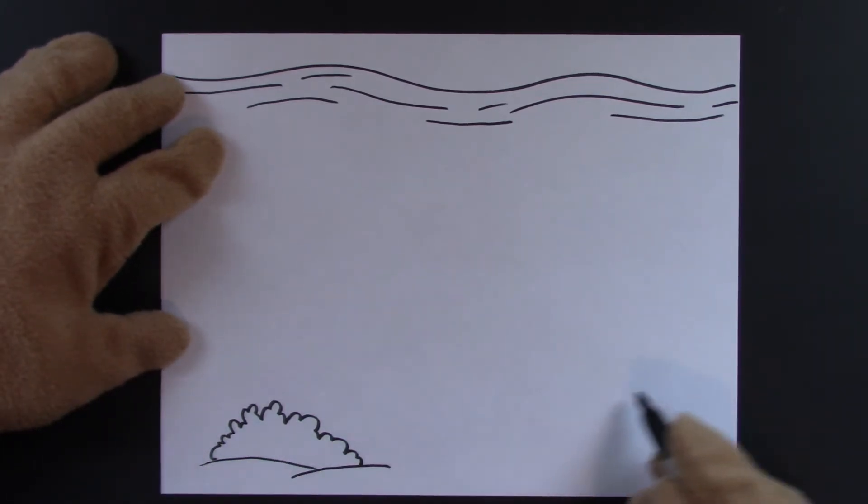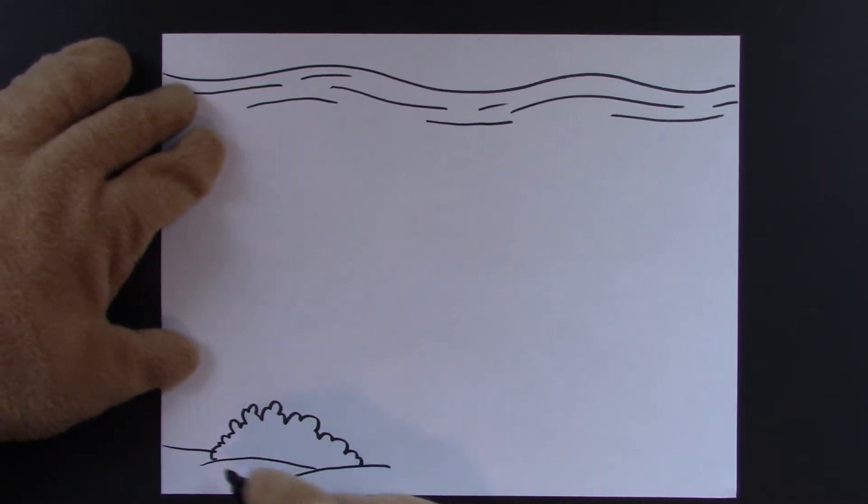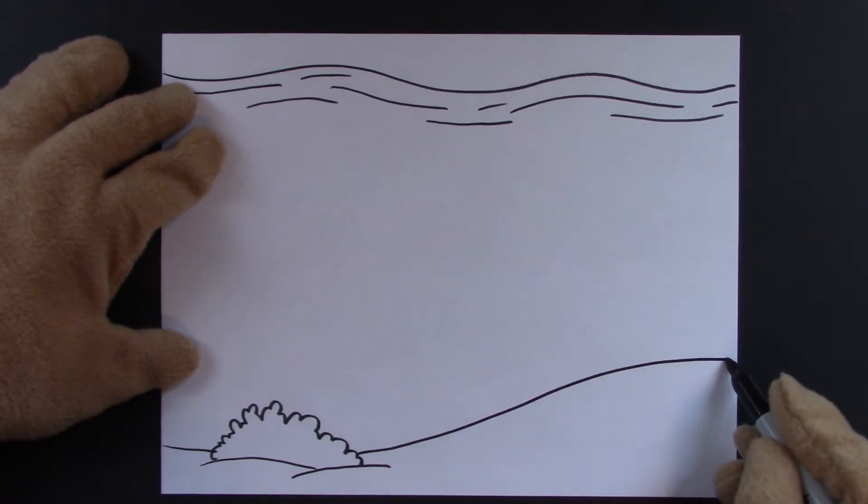Now let's draw the sand across the bottom of the sea. We'll start at the edge and imagine it goes behind our lump of coral. And we'll pick it up and continue up just like so.